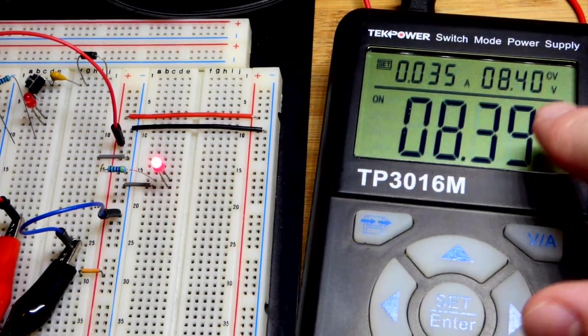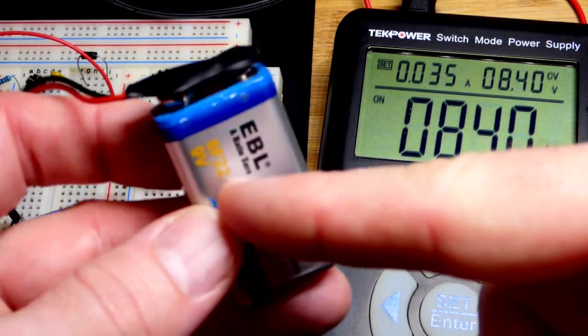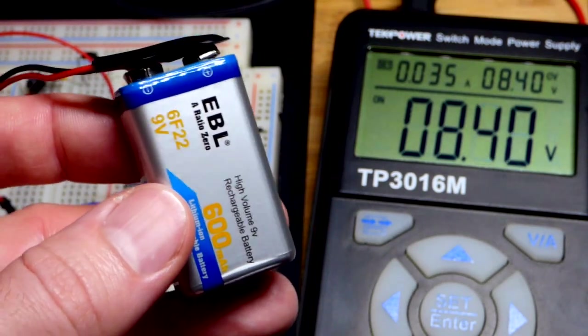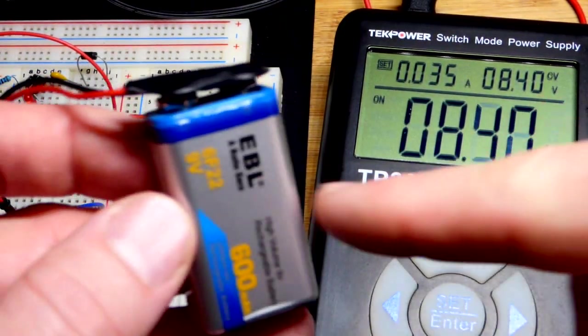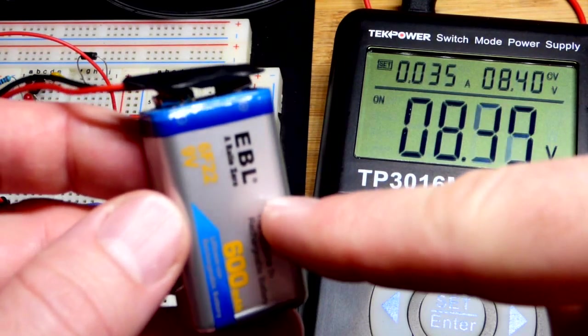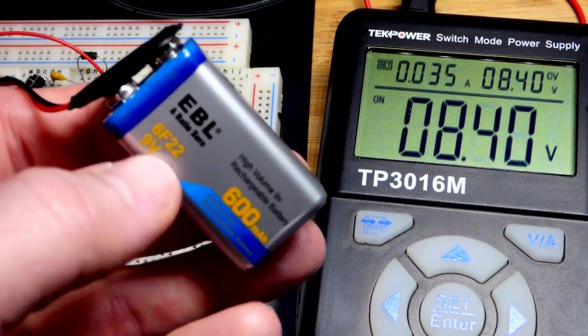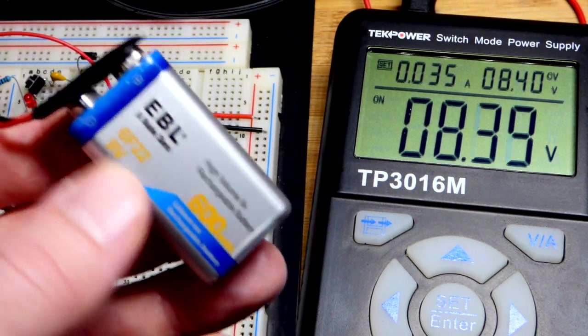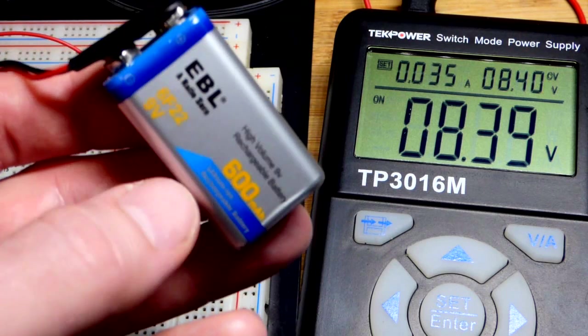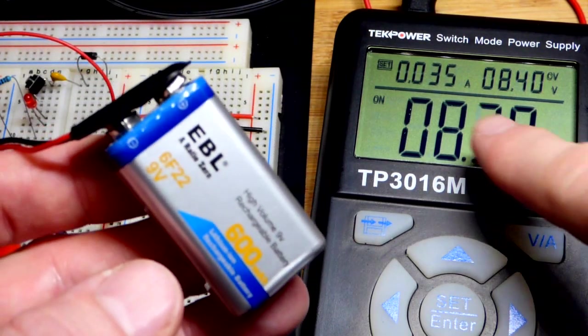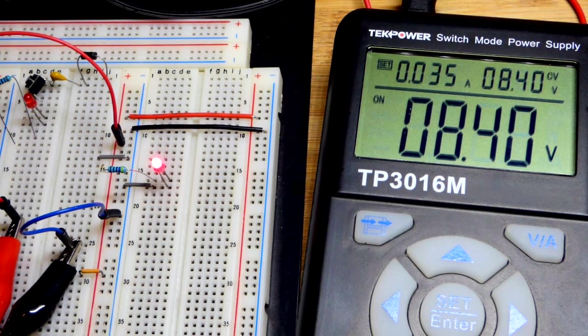First we're going to look at our setup here. We have 8.4 volts at the power supply powering this load. The reason I'm using 8.4 volts is this says 9 volts on it, but it's actually not really a 9 volt battery. It's just a replacement for an alkaline 9 volt battery. It actually charges up to 8.4 volts when you put it on its charger. This is lithium ion.